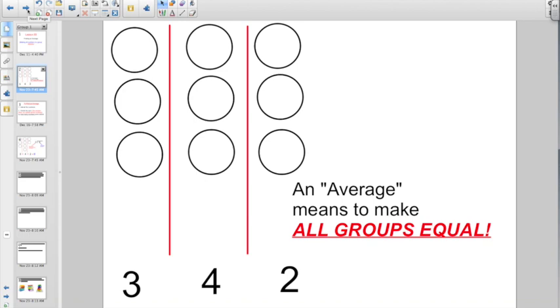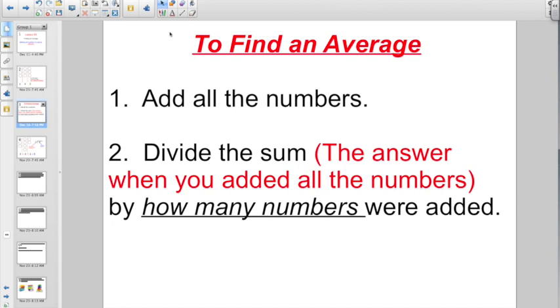But you're not going to always be able to draw a picture and do it so easy. So there must be an algorithm for this. To find an average, it's two steps. First, you add all the numbers. Then you're going to divide the sum, remember the answer when you added all the numbers, by how many numbers were added.